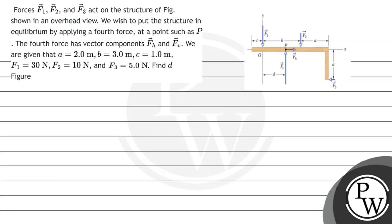Hello, watch. Let's see this question. The question says forces F1, F2, and F3 act on the structure of figure shown in an overhead view. We wish to put the structure in equilibrium by applying a fourth force at a point such as P. The fourth force has vector components Fx and Fy. We are given that A equals 2.0 meters, B equals 3.0 meters, and C equals 1.0 meter.